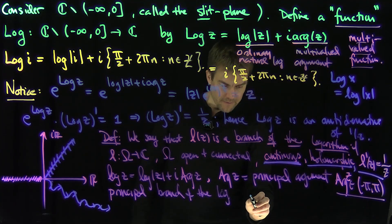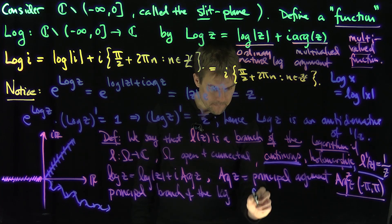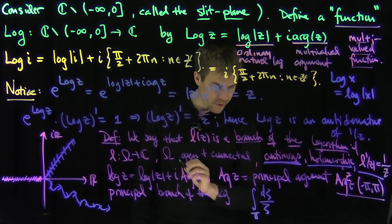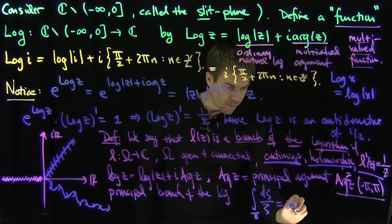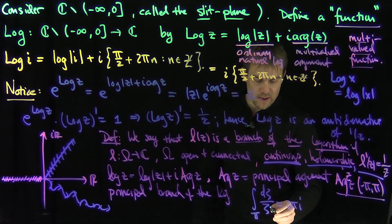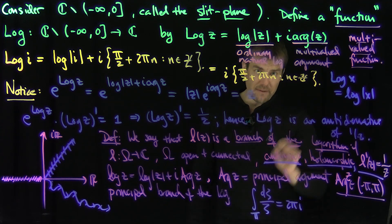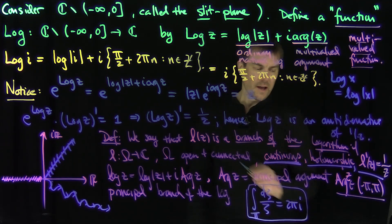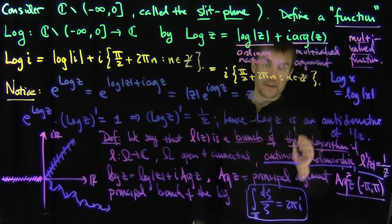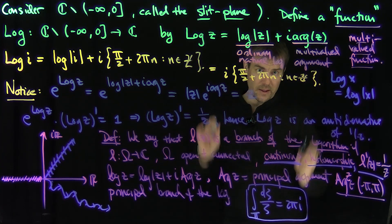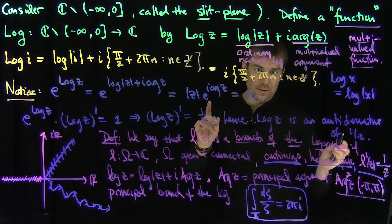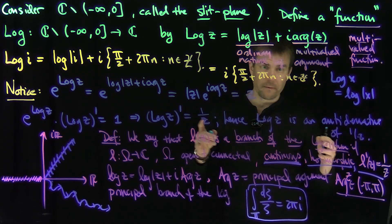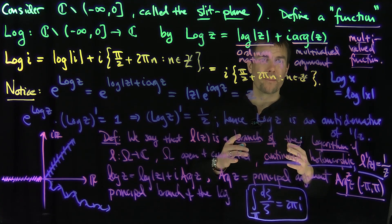Recall that if I integrate d-zeta over zeta over the unit circle oriented once, I get 2πi. If I did any other power of zeta, I would get 0. So 1/zeta is the only one that gives a non-zero residue. We'll use that idea to prove the residue theorem, which will aid us in computing winding numbers and computing various integrals — a very powerful mechanism. Thank you very much.